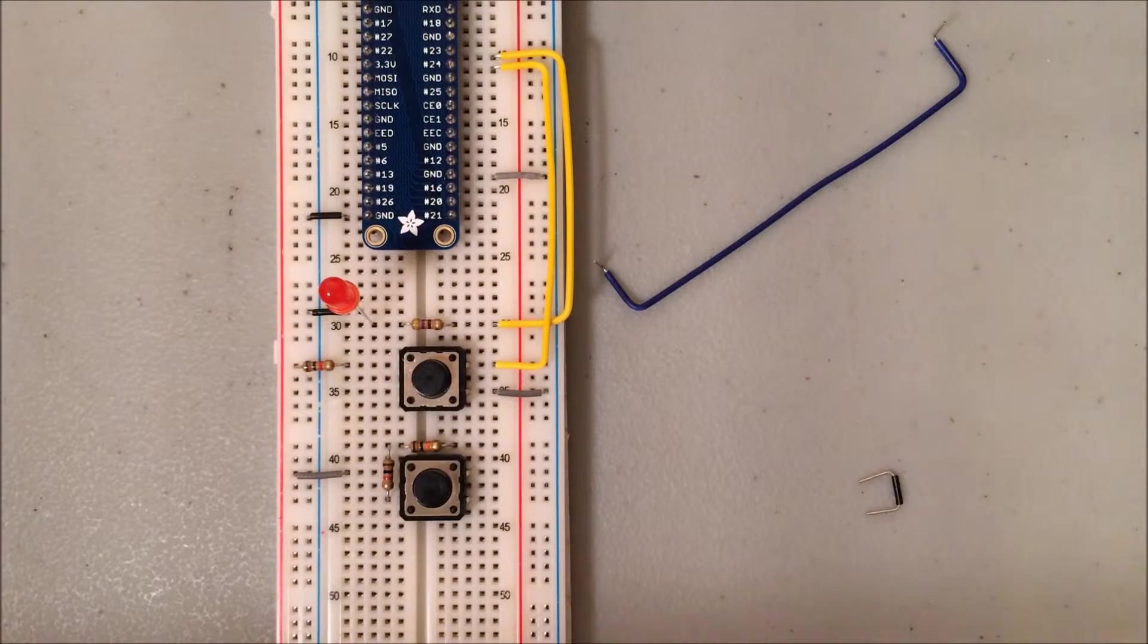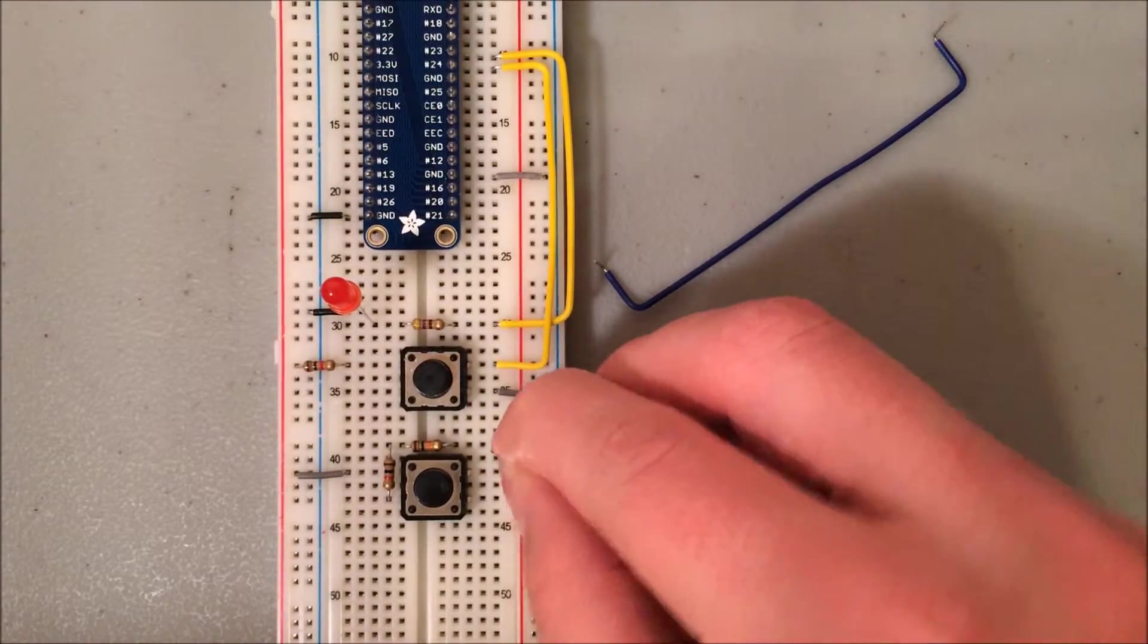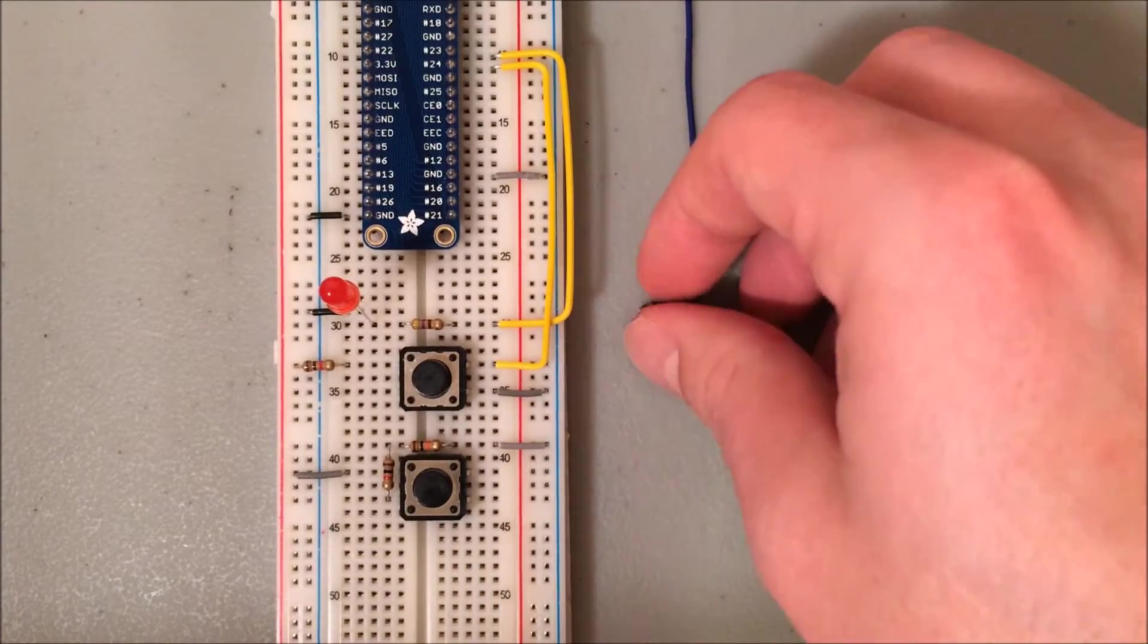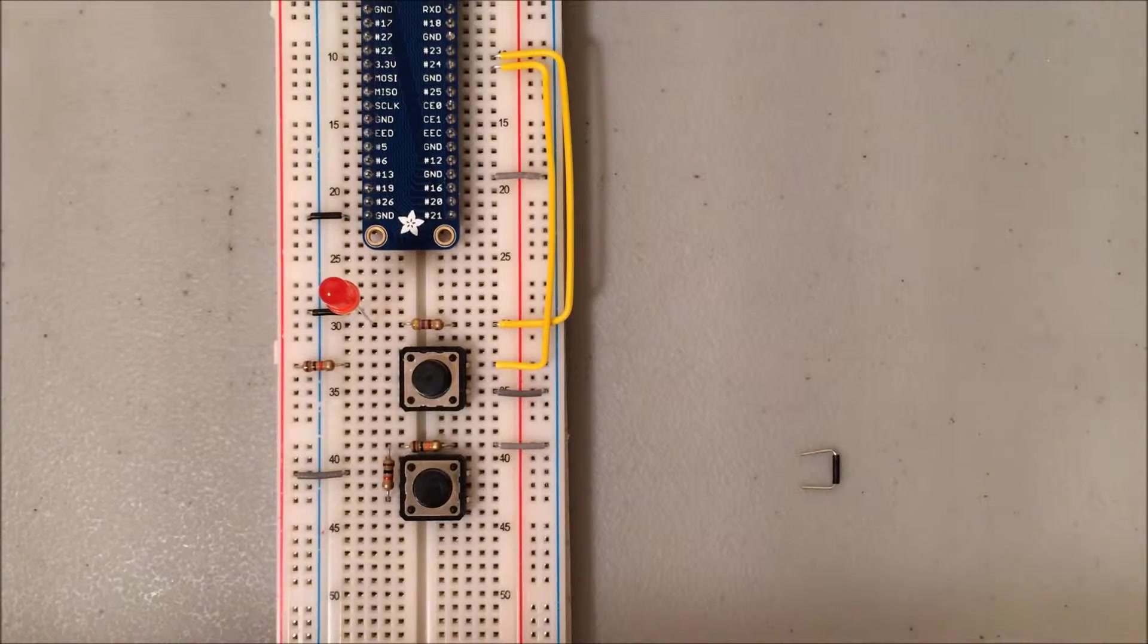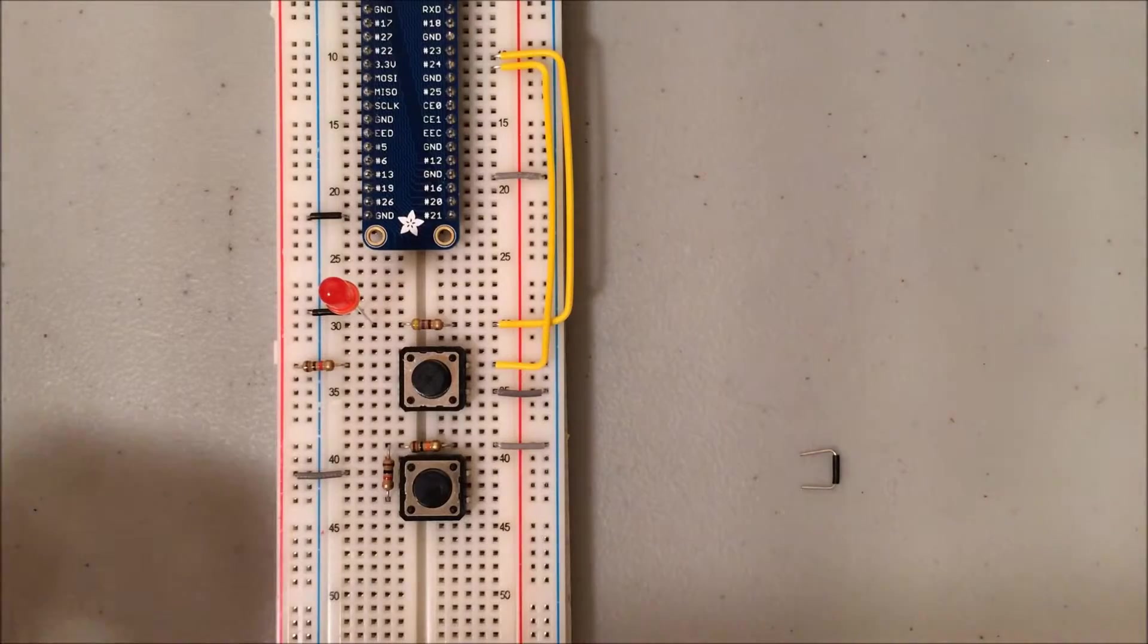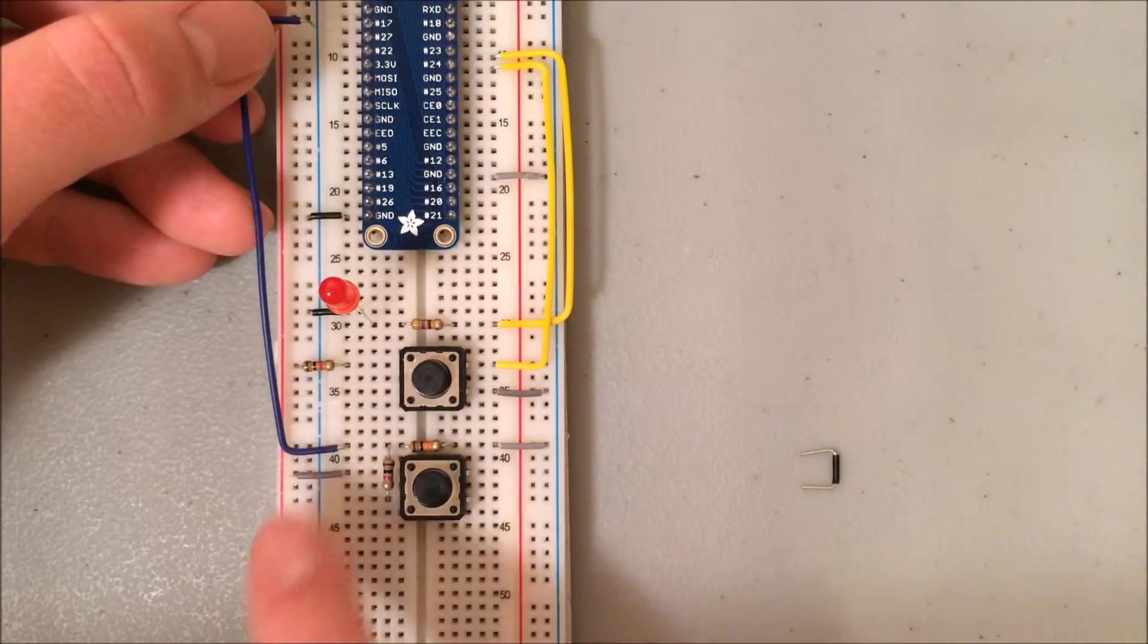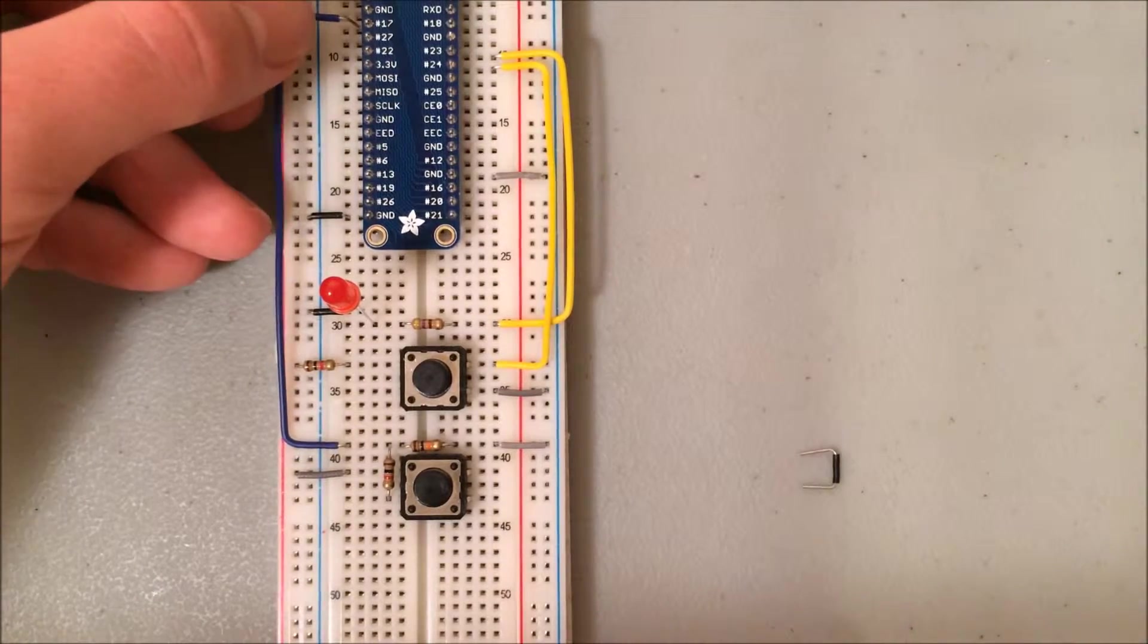I'm going to grab a wire here, and this is going to be my path to ground. This is going to come off of row 39 and into the negative rail on the right. And then my next step is going to be running this wire from row 39 on the left up to my next GPIO input pin, which is pin 17. So I'm connecting row 39 down here up to GPIO pin 17, which is actually row 8.